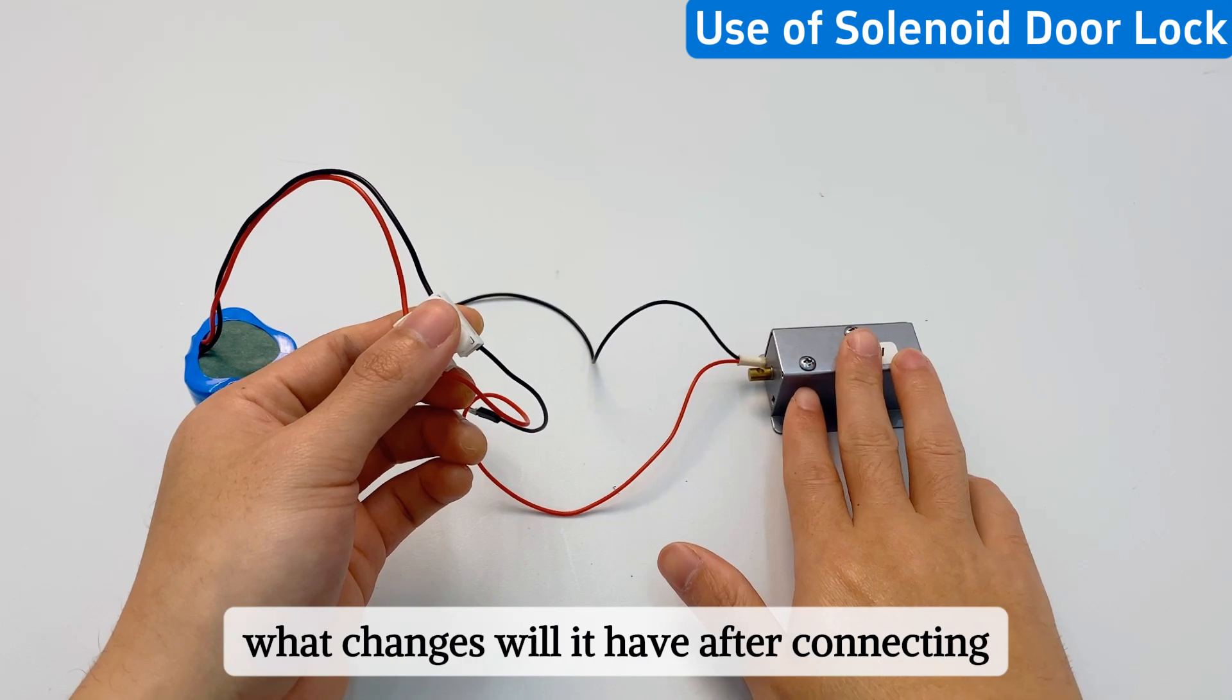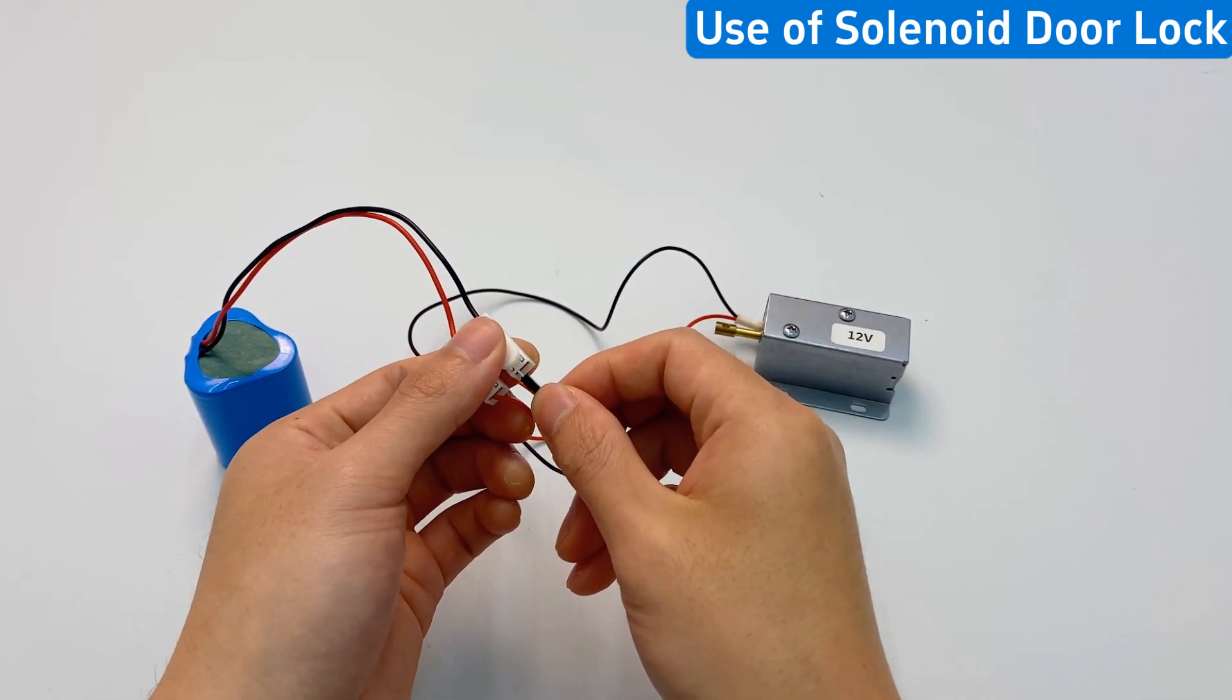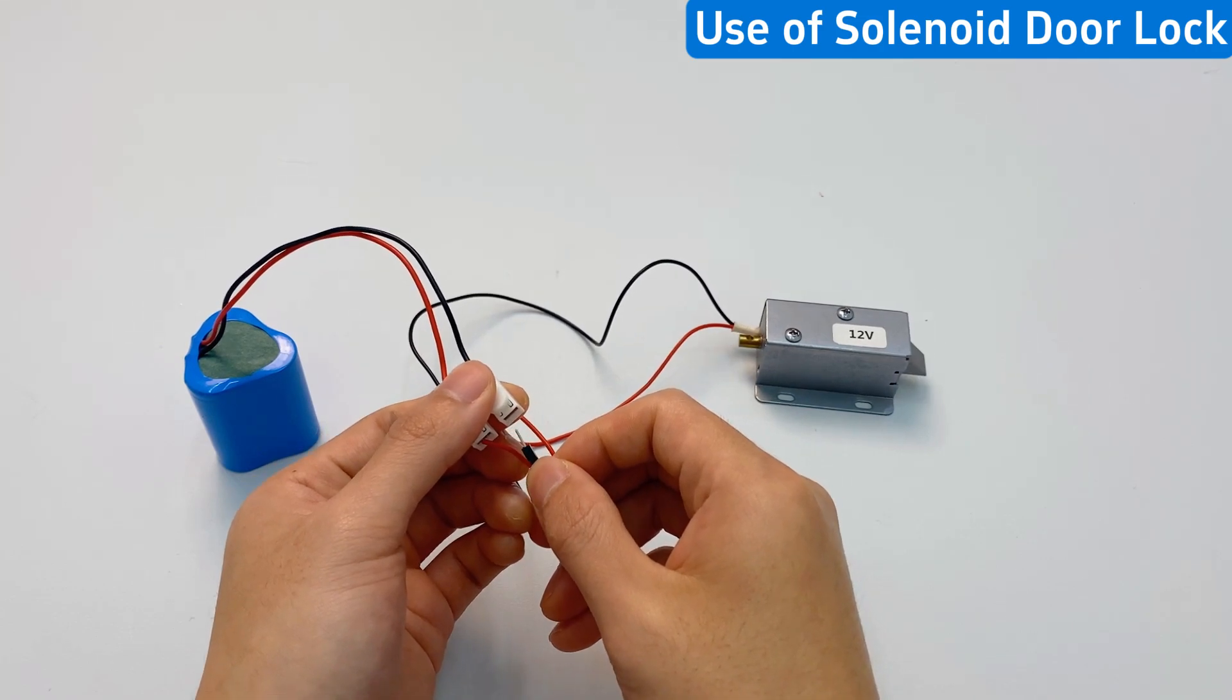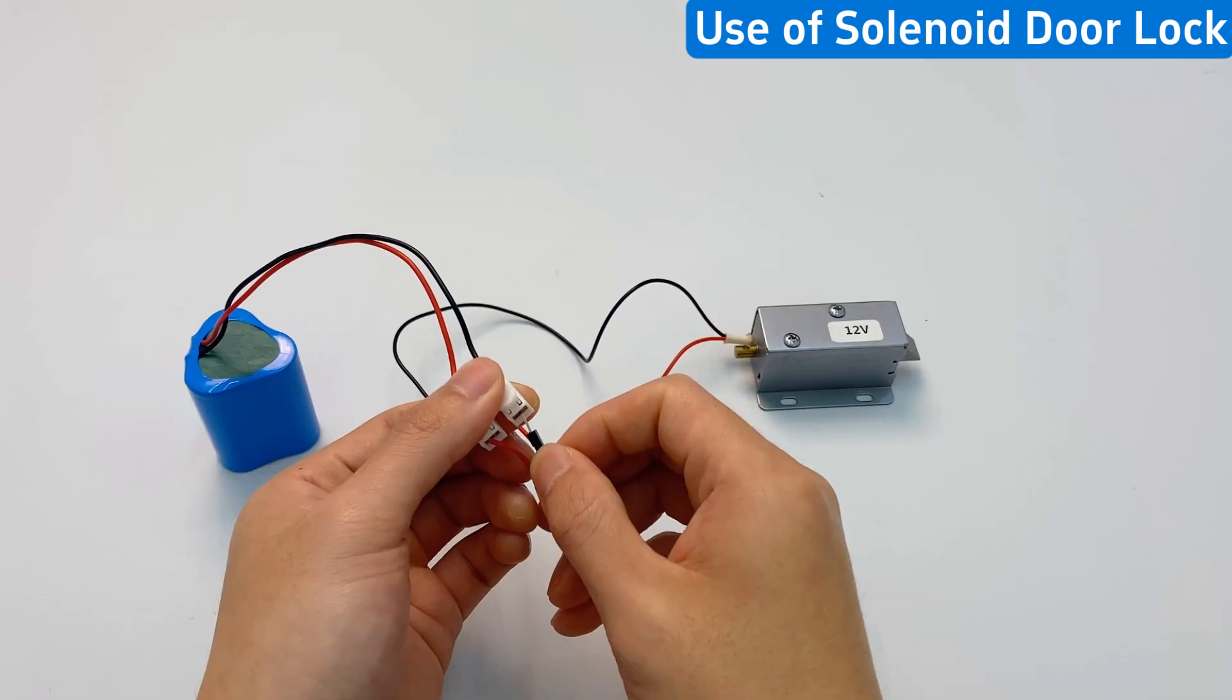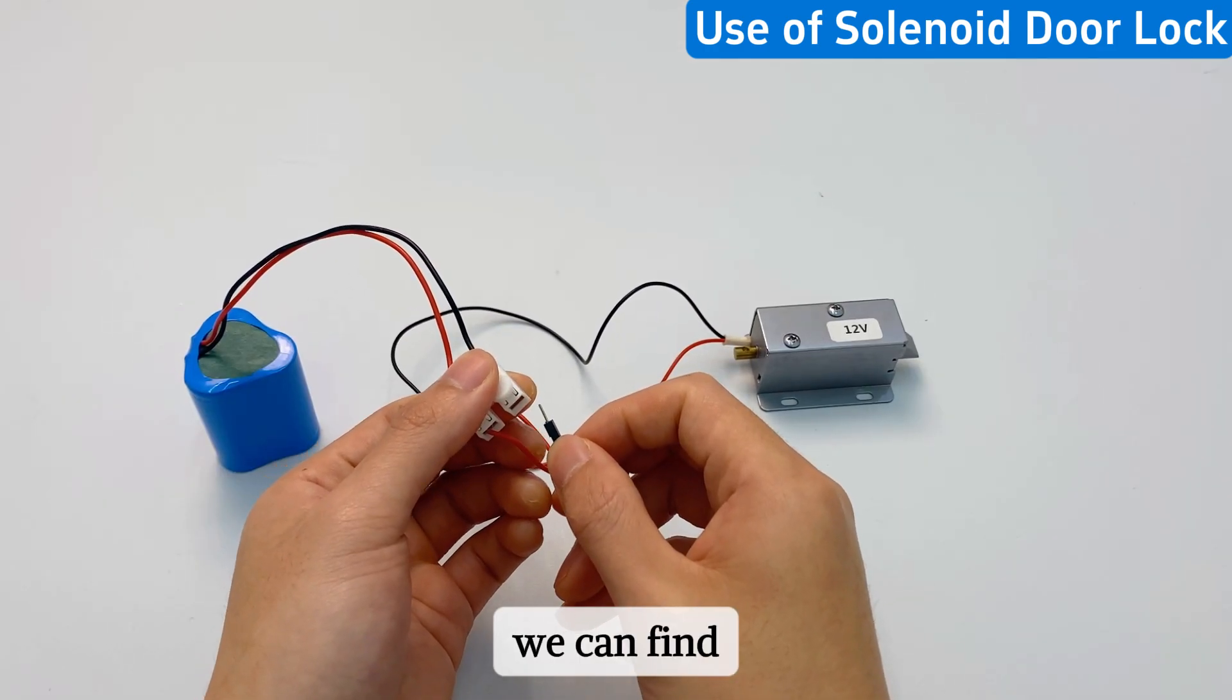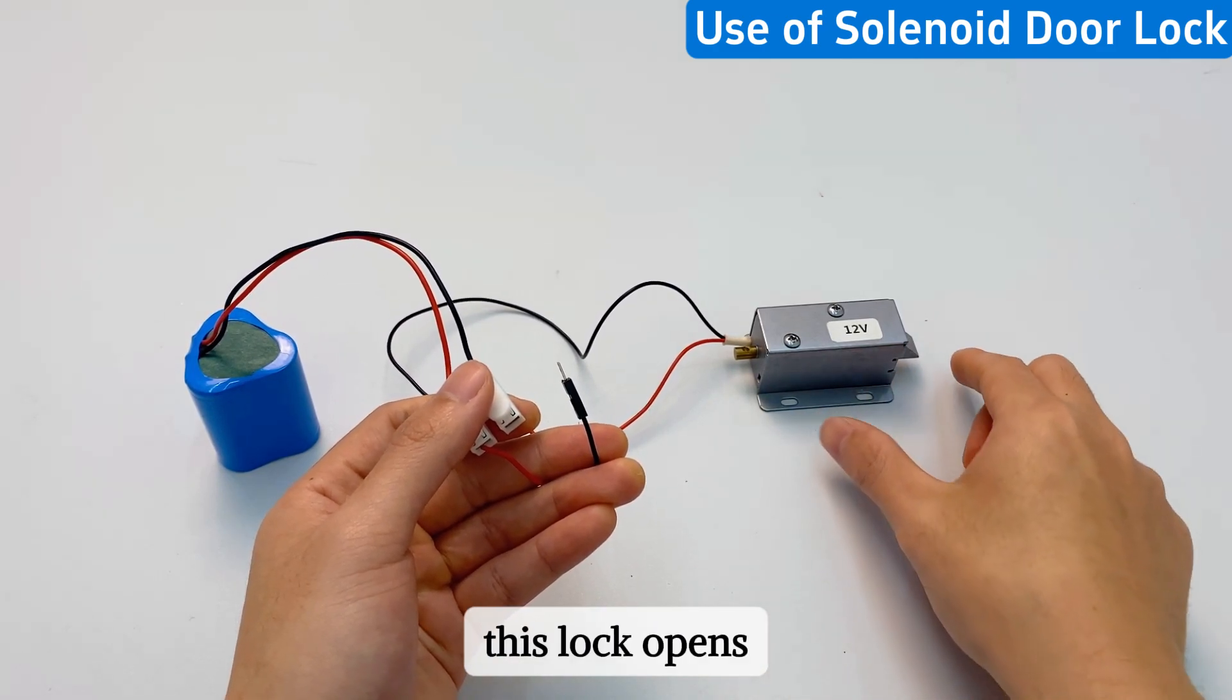Then let's see what changes will it have after connecting. We can find when I connect, this rod will shrink. This lock opens.